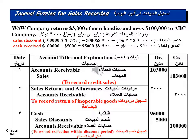First entry: to record sales on account — Accounts Receivable debit $103,000; Sales credit $103,000. Second entry: Sales Returns and Allowances debit $3,000; Accounts Receivable credit $3,000. Third entry: Cash debit $95,000; Sales Discount debit $5,000; Accounts Receivable credit $100,000. Description: to record collection of cash within the discount period.